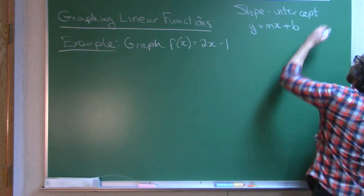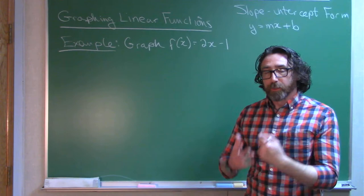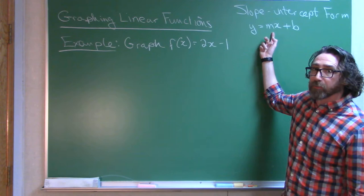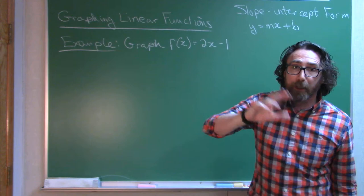Now mathematicians are not very creative with names. When you've got the slope-intercept form for a linear function, the coefficient of x is your slope, and there is your y-intercept.